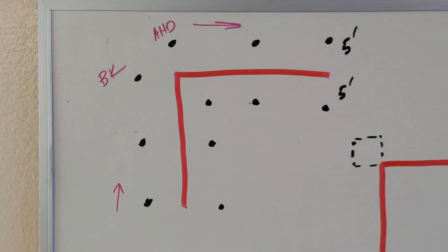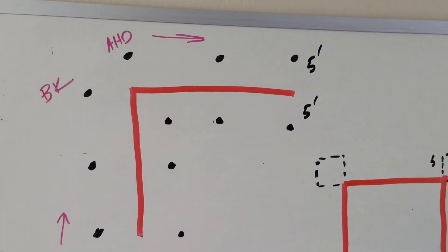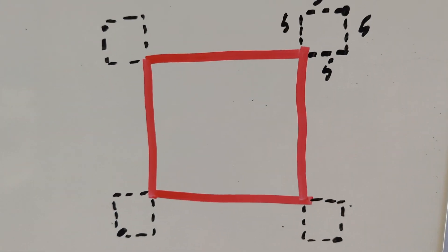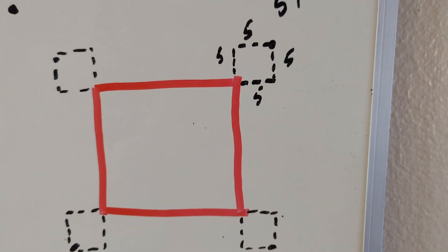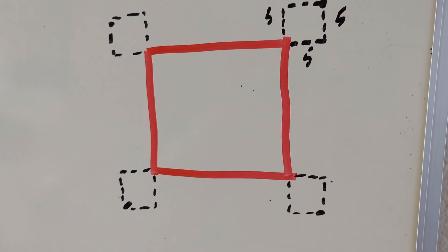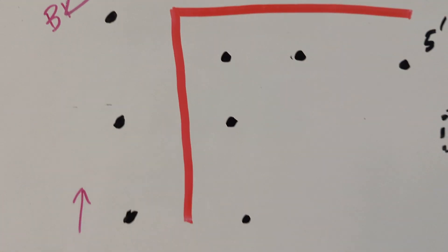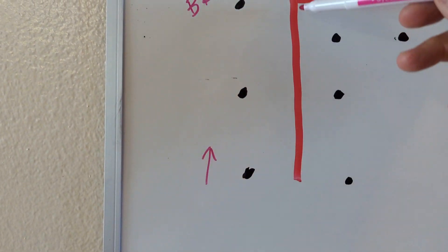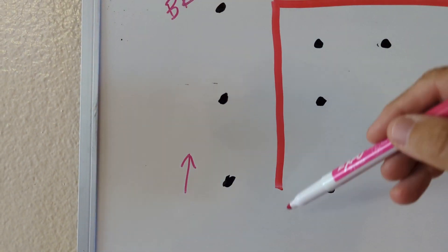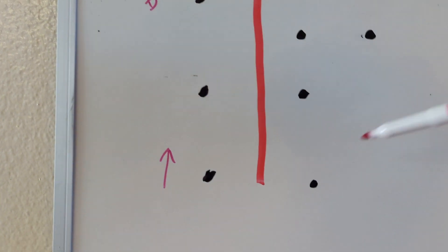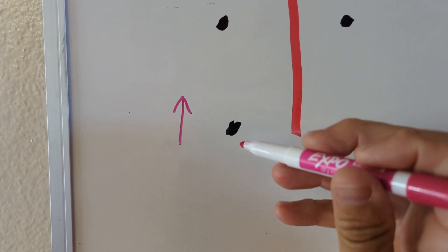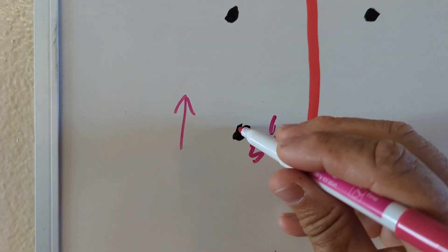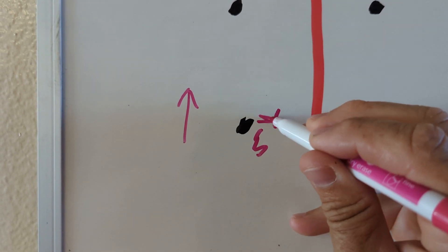This is your friendly neighborhood surveyor. I've gotten questions about five-by-fives — specifically why do people do five-by-fives for building corners. Let's start with staking. Pretend this red line is a curb. This is a five-foot offset to our curb, and this is our hub or nail or whatever — five-foot offset.